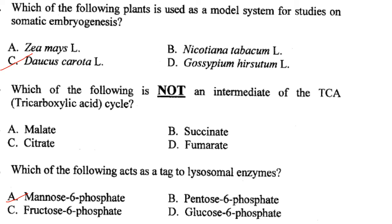Which of the following acts as a tag to lysosomal enzymes? For targeting enzymes to lysosomes, the tag used is mannose-6-phosphate. Answer is option A.